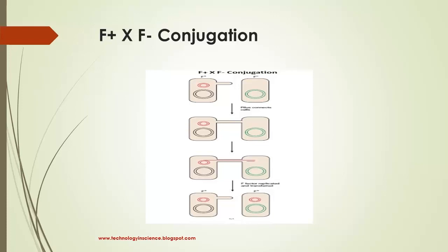The sex pilus or F pilus joins the donor and recipient and may contract to draw them together. The channel for DNA transfer could be either a hollow F pilus or a special conjugation bridge formed upon contact.